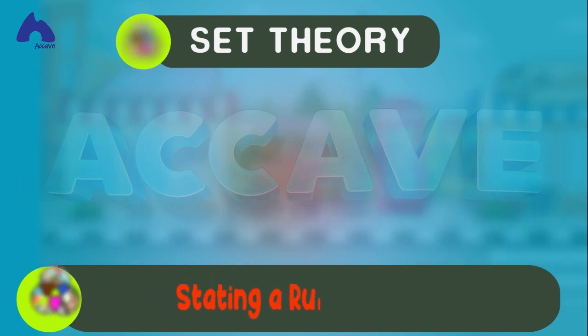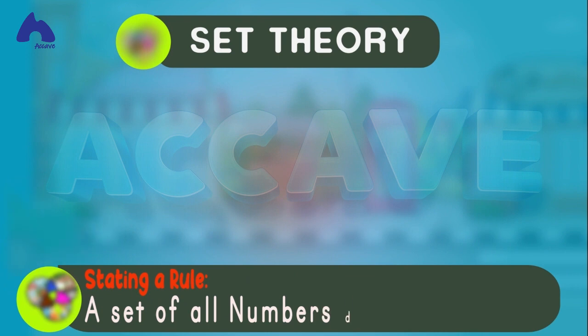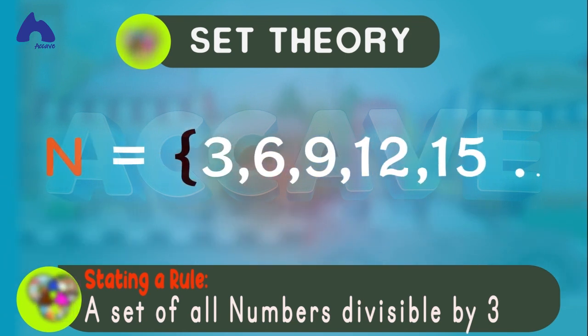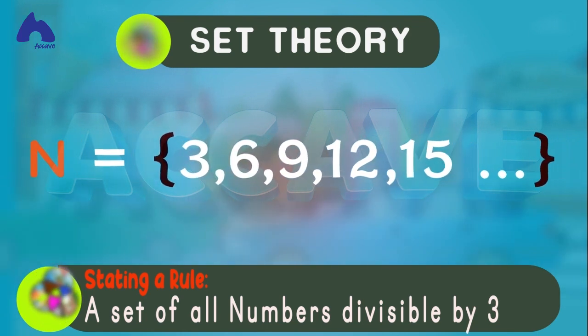It can also be described by stating a rule, for example, a set of odd numbers divisible by 3. See, that's a rule. So, if the set N is a set of odd numbers divisible by 3, to give us these numbers.